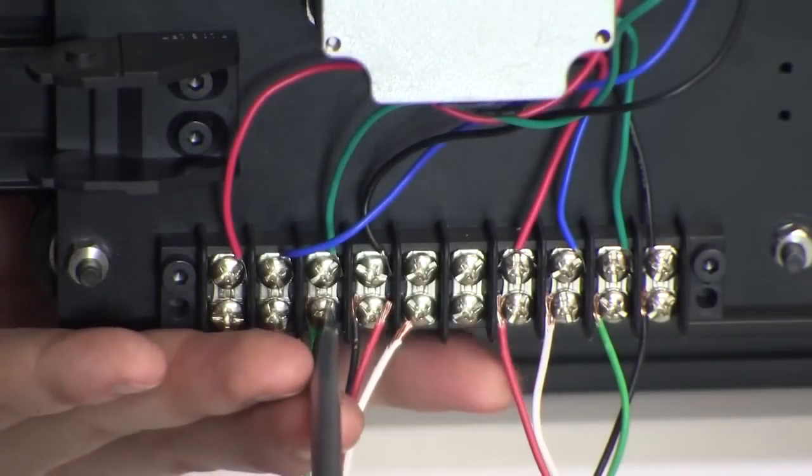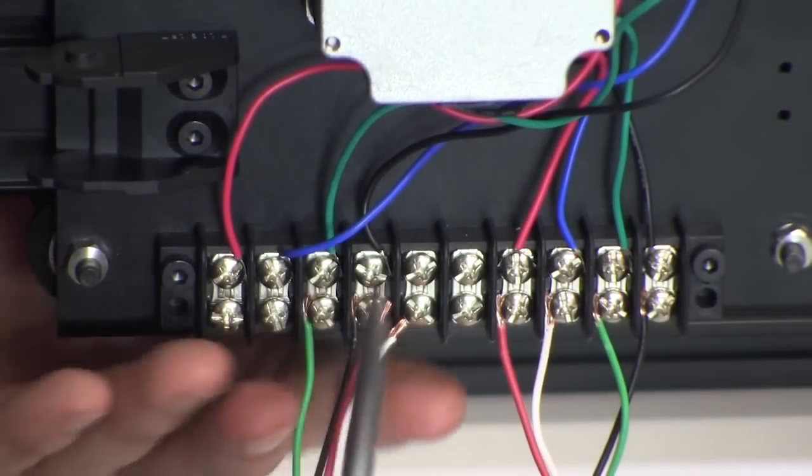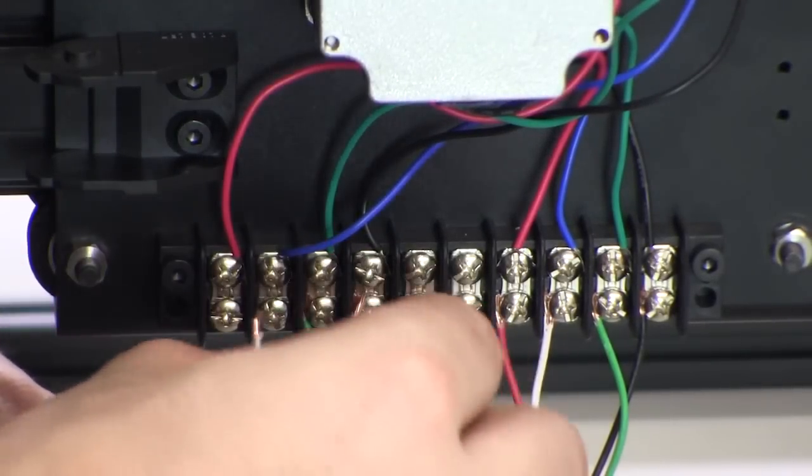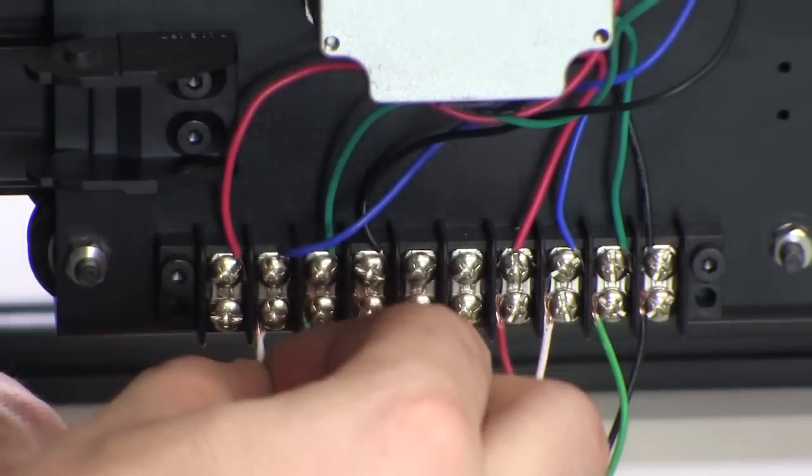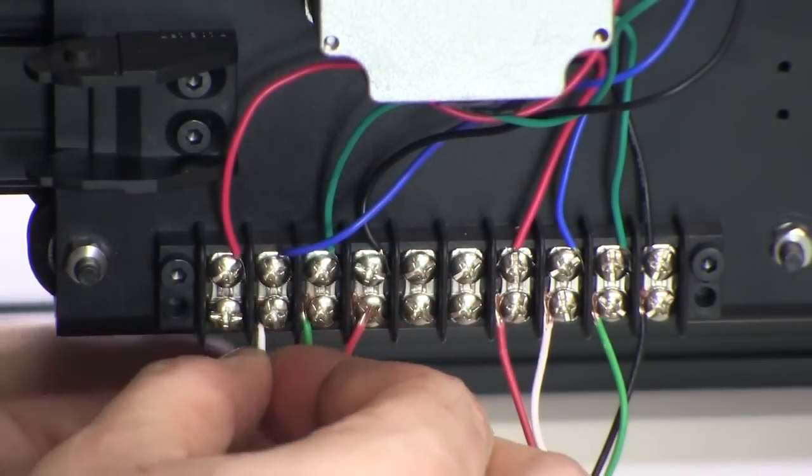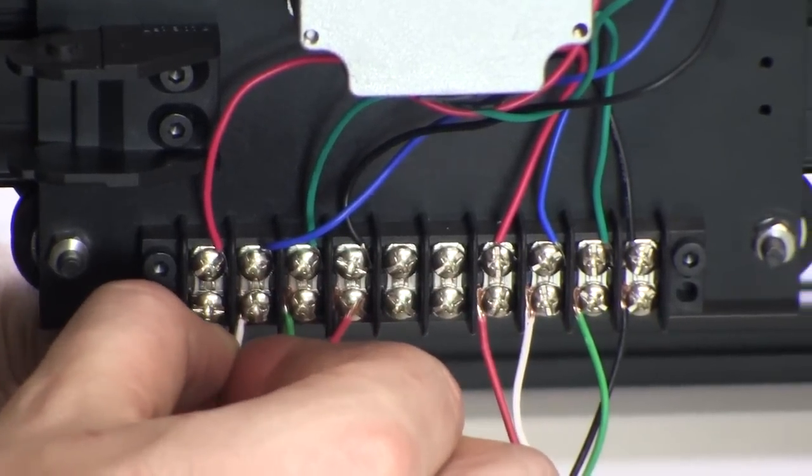Next, take the two six-foot lengths of stepper cable and prepare them as before. Put them into the 10 terminal block on the backside of the X-carriage corresponding to the X and Z motors.